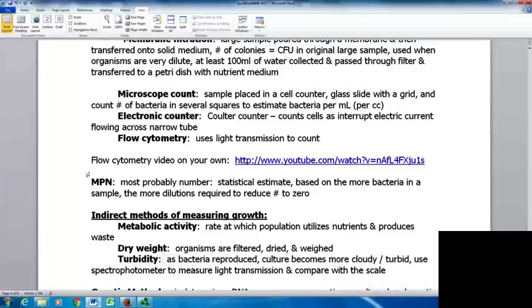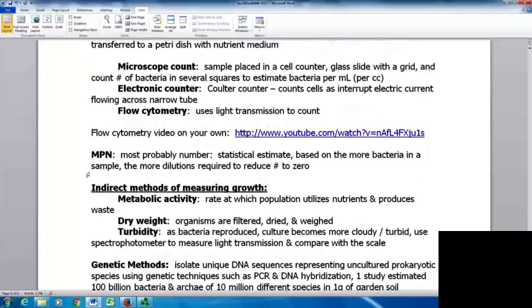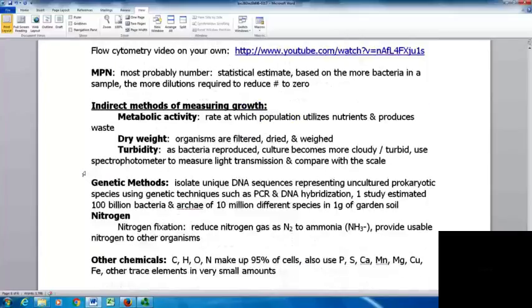Here's a video clip on flow cytometry. The MPN is your most probable number - a statistical estimate. It's based on the more bacteria in the sample you have, the more dilutions required to reduce that number to zero. We have indirect methods. One way is looking at metabolic activity - you look at the rate the population utilizes nutrients and produces waste and estimate how many organisms you have. You can look at dry weight - organisms are filtered, dried, and weighed. With turbidity, as bacteria are produced, the culture becomes more cloudy or turbid. You use a spectrophotometer to measure light transmission and compare it with a known scale to estimate number of organisms.